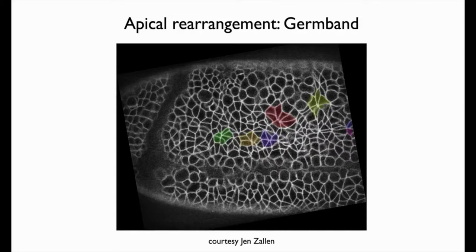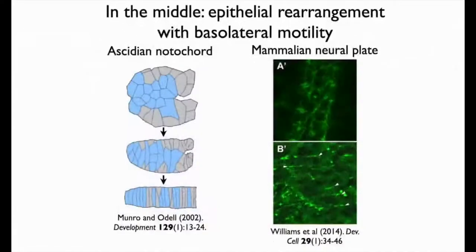There are other cases that are sort of in the middle. One is the ascidian notochord primordium studied by Edmund Rowe at the University of Chicago. The blue cells undergo convergent extension, but protrusions are made neither at their extreme apical nor basal surface, but somewhere in the middle.